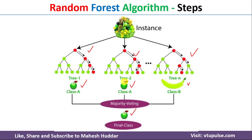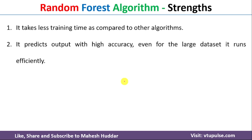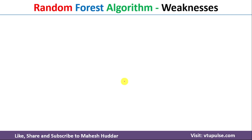Now let's look at the strengths of the Random Forest algorithm. First, it takes less training time compared to other algorithms — including ensemble methods like boosting and traditional algorithms like SVM. Second, it predicts output with high accuracy even for large datasets and works efficiently. Third, it can maintain accuracy even when a large portion of the data contains missing values, outliers, or noisy data.